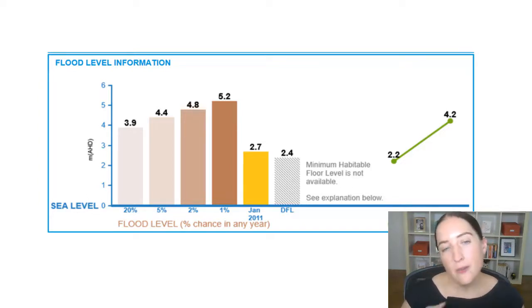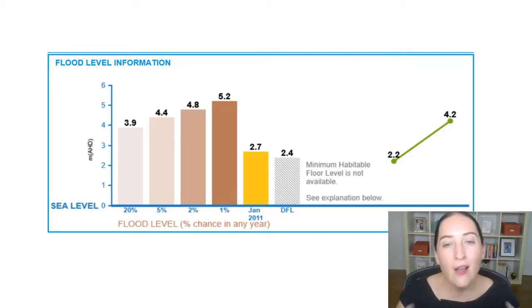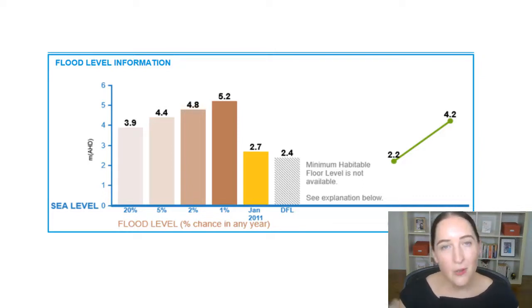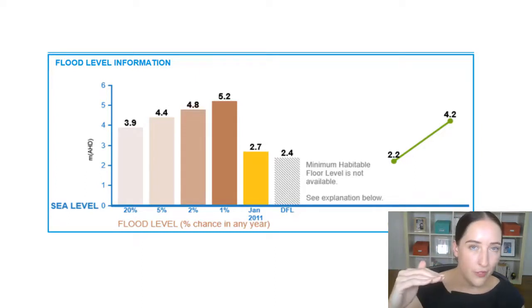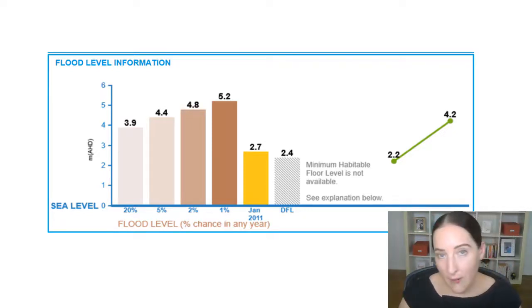As you can see, we've got the 1%, 2%, 5%, and 20% AEP levels. AEP stands for Annual Exceedance Probability. In super simple terms, there is a 1% chance each and every year that a flood will occur that reaches a level of 5.2 meters. That 5.2 meters is AHD — Australian Height Datum — or in super simple terms, sea level. So the water gets to 5.2 meters above sea level in a 1% flood event, as opposed to 3.9 meters in a 20% flood event. Obviously 20% has a higher chance of occurring than 1%.